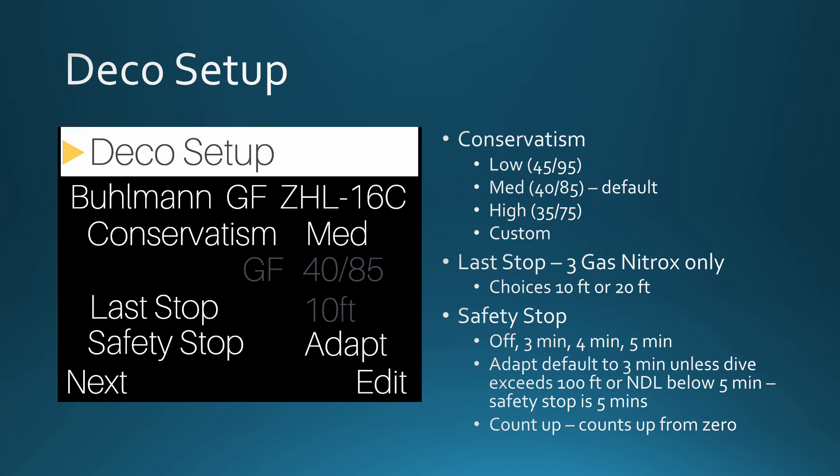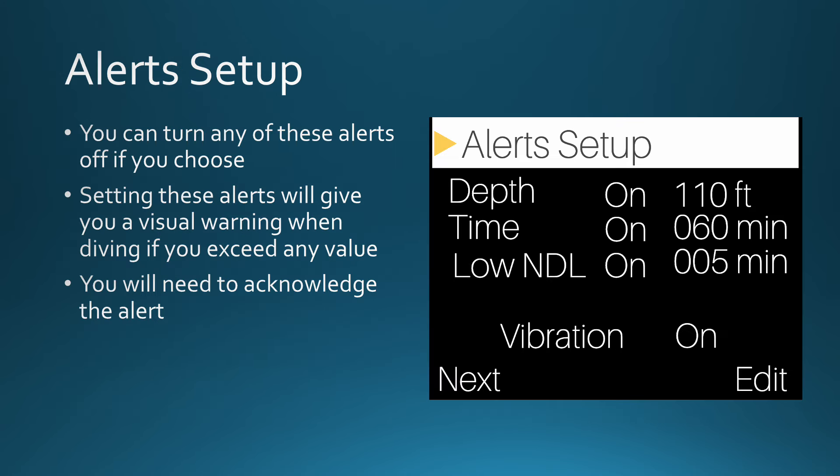If you are so inclined, you can set the Peregrine to count up from zero on your safety stop. Alerts can be an important safety setting. As you can see here, we can set depth, time, and low NDL on this computer. Most computers have similar settings. The Peregrine can also provide a vibration alert. Computers also come with audible alerts. You will need to understand how each computer displays an alert and how you need to acknowledge the warning.